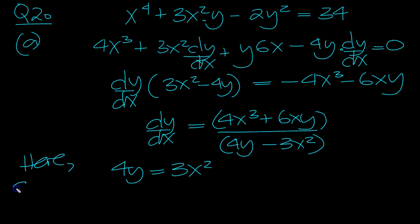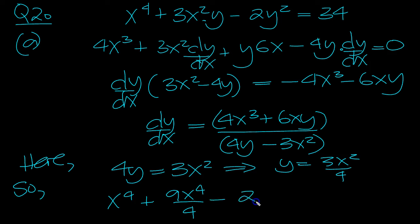So we can sub that in, x to the 4, plus 3x squared times y. Now, it's another 3x squared over 4. So that would give 9x to the 4 over 4, minus 2y squared. So this would be 9x squared, so this would be 9x to the 4 over 16, times 2, equals 34.